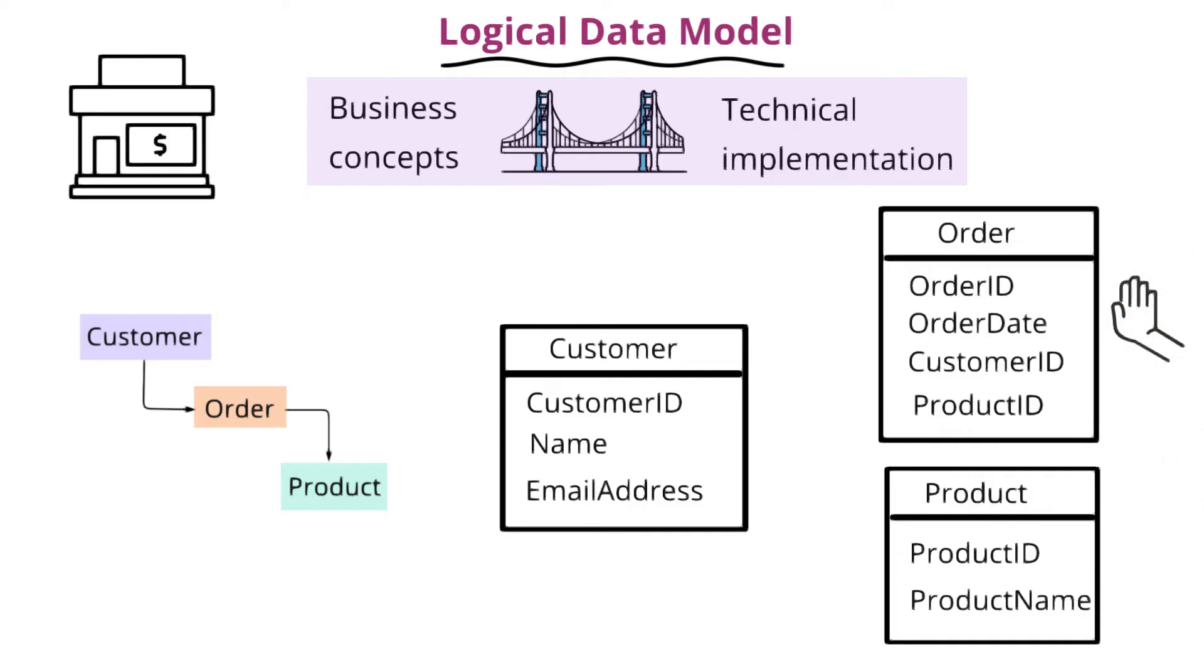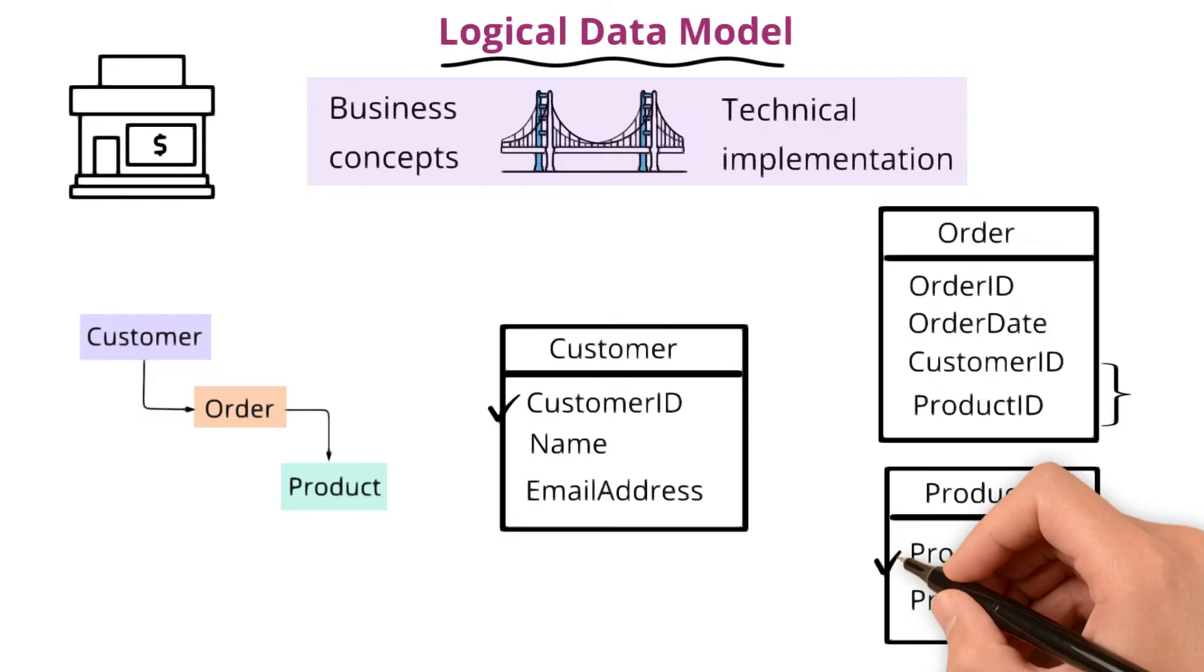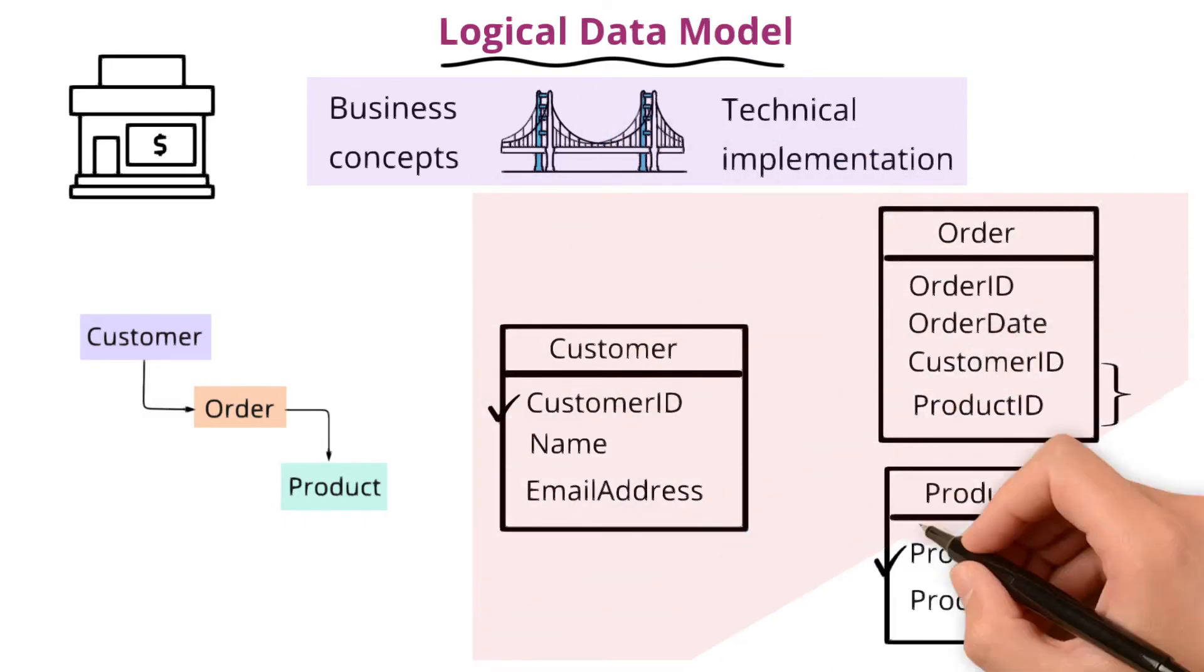Wait a second. Why did we add customer ID and product ID in the orders entity while they are part of their original customer and product tables respectively? Let's talk about that.